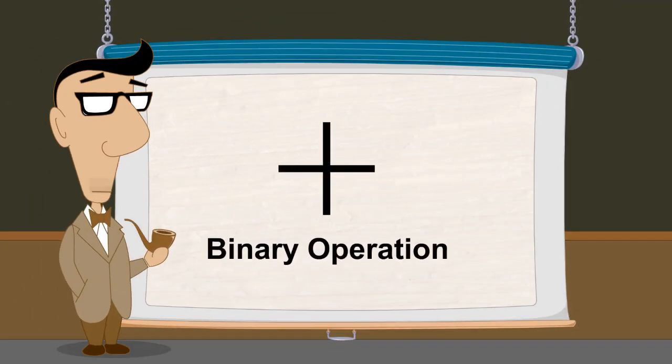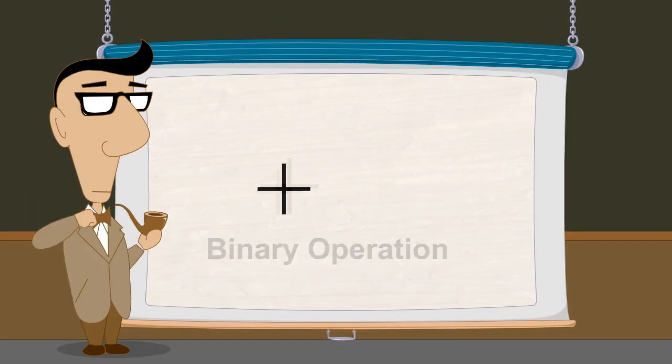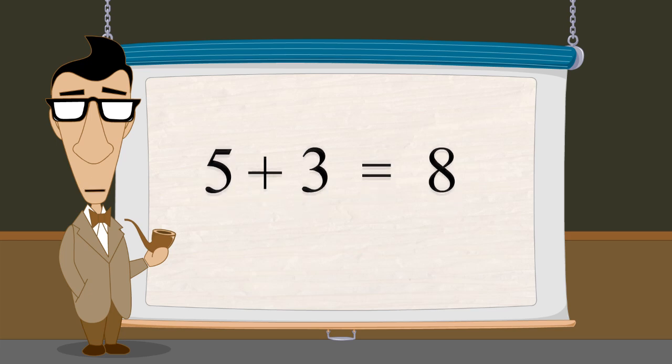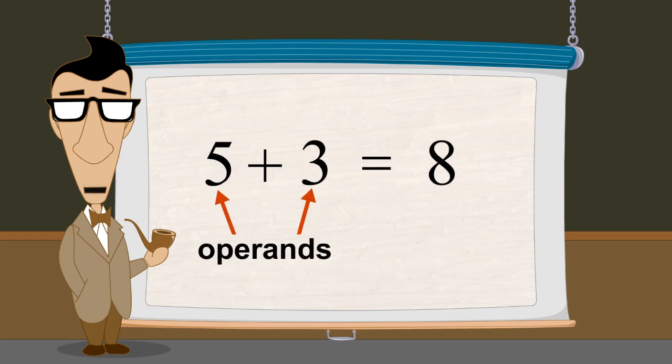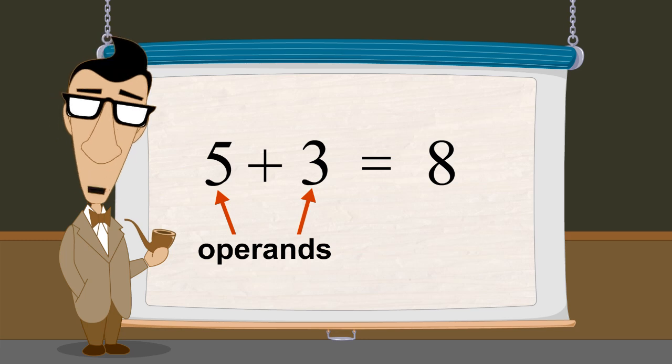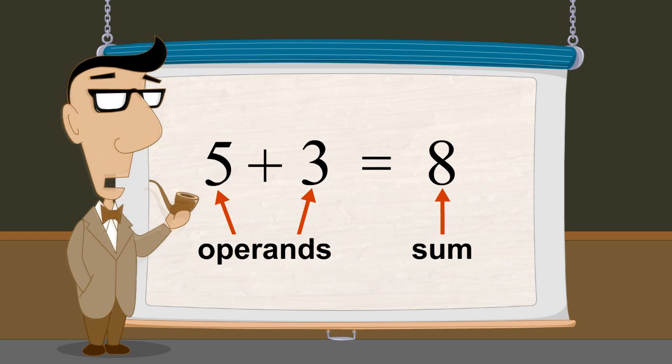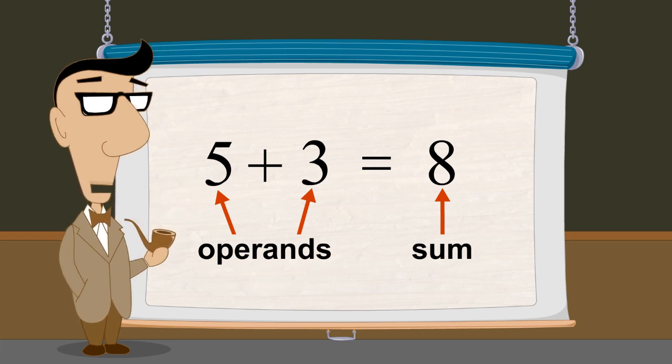Addition is a binary operation. Binary operations are mathematical calculations which involve two numbers. These numbers are called operands. And in the case of addition, these operands are added together to produce a result called the sum. In addition operations, the operands are sometimes referred to as the add-ins.